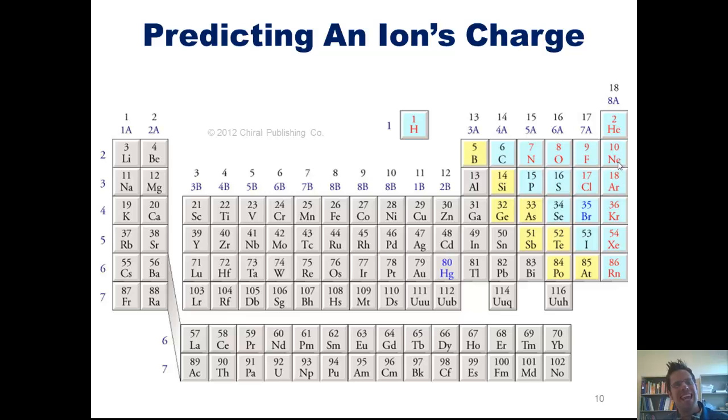Once again, each time an element gains an electron, it moves one column to the right on the periodic table in terms of how it feels. Each time an element loses an electron, it moves one column to the left. When elements gain electrons, they become negatively charged. And when they lose electrons, they become positively charged. Atoms that have charges on them are called ions.